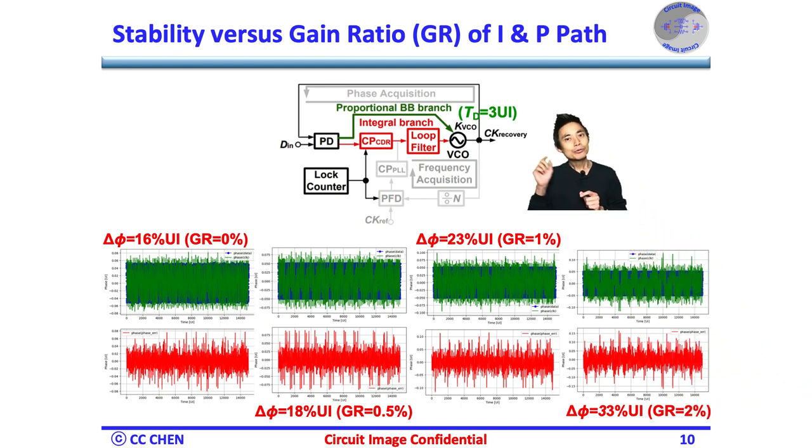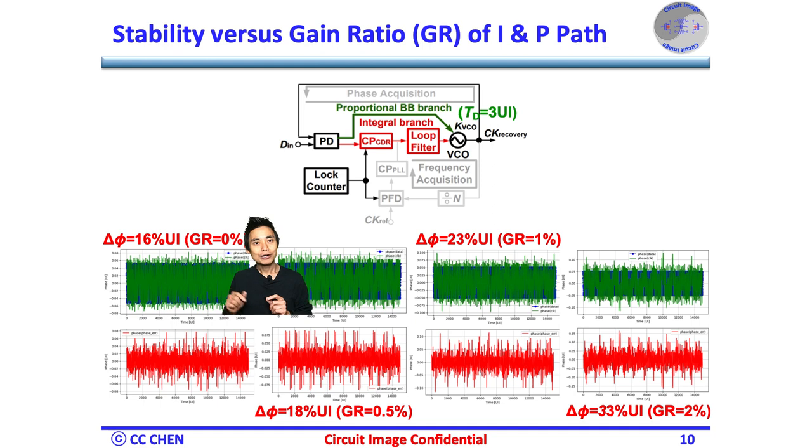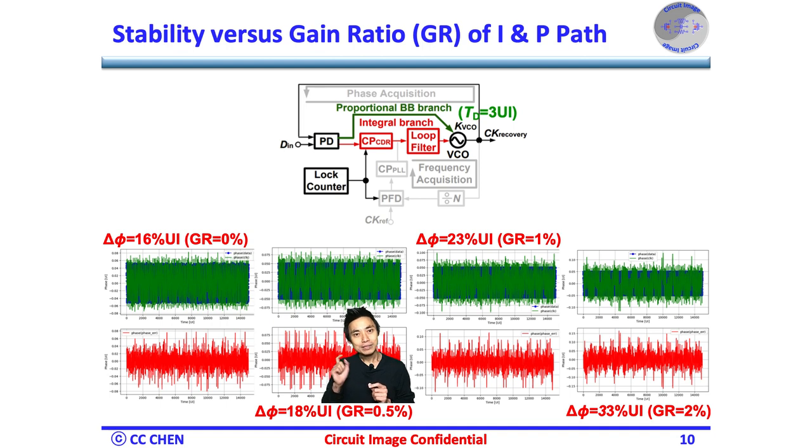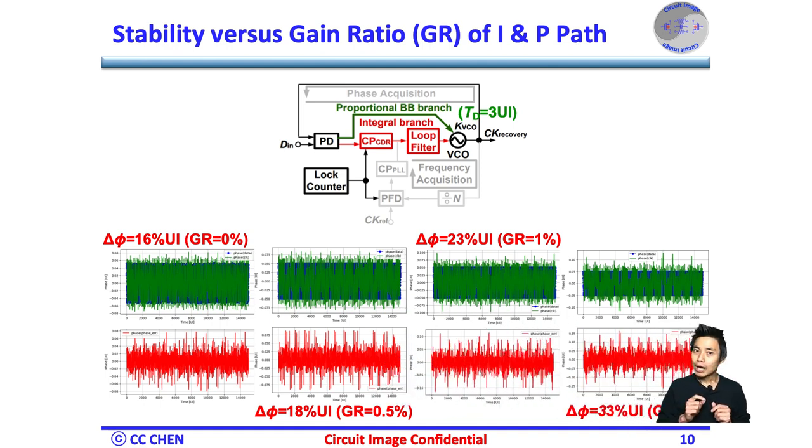As you can see, with the proportional 3 UI loop latency, the phase error would be 60% UI if the integral path gain is 0, which provides the baseline maximum phase error you can achieve. But that's unrealistic. Therefore, we should start to increase the integral gain to track the frequency offset. With the 0.5% gain ratio of the integral path and proportional path, the maximum phase error would only increase by 2% UI. But it reaches up to 33% UI if the gain ratio is 4 times, which is 2%.